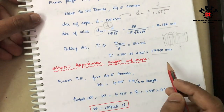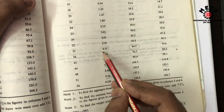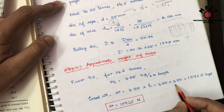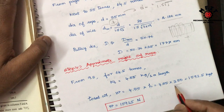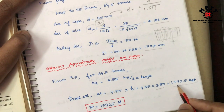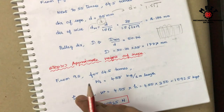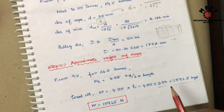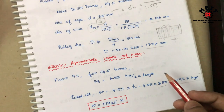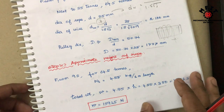Step number 4 is the weight of rope calculation. From the previous table, weight per meter is 4.55 kg. We need to lift a total of 350 meters. So 350 × 4.55 = 1592.5 kg. That is approximately 1.5 tons. This is the weight of the rope we have to account for when lifting.